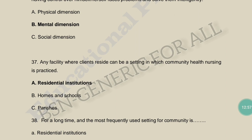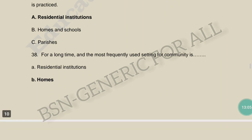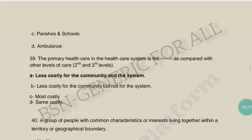Any facility where clients reside and receive care in which community health nursing is practiced — this is a residential institution. Primary health care in the healthcare system is the least costly as compared with second and third level care — it is much less costly for the community and the system.